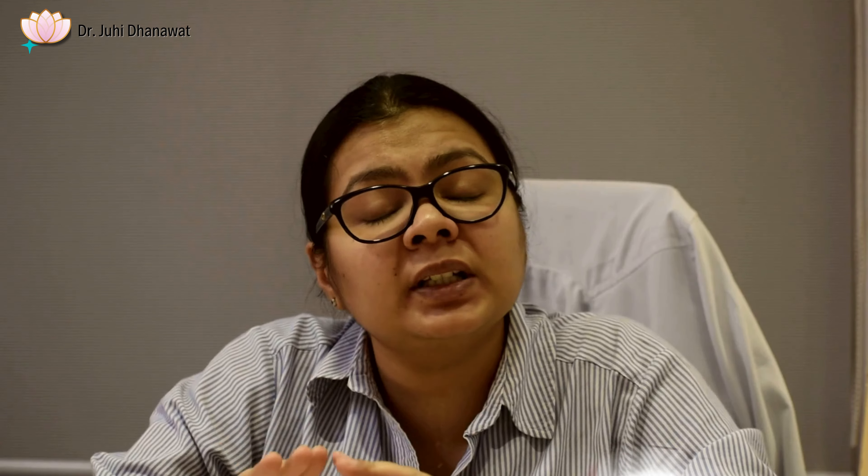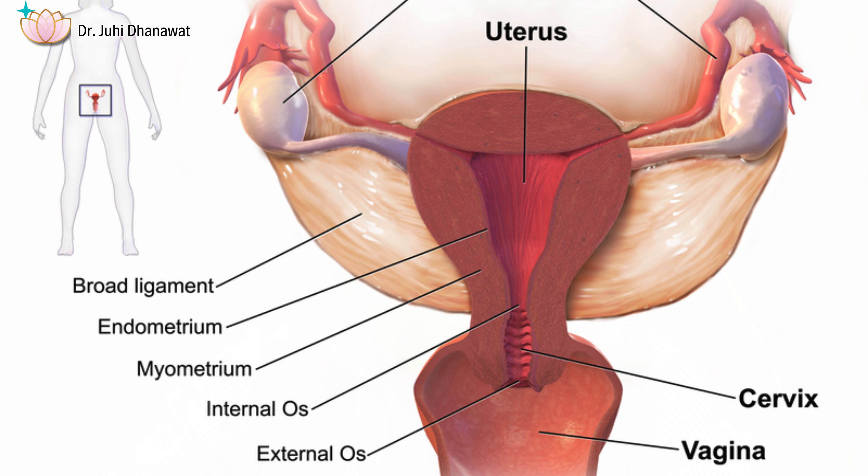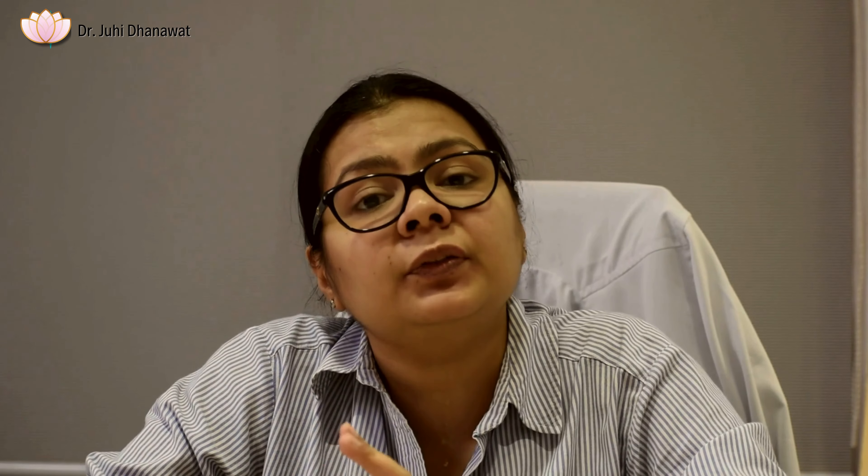Fourth, if your tubes are affected, they can be very much damaged — both physical damage and functional damage can occur. So these are the basic causes of how endometriosis leads to infertility.